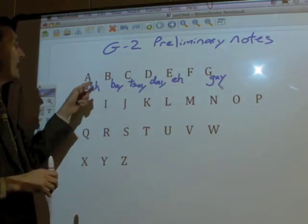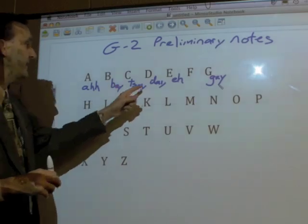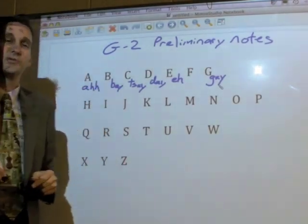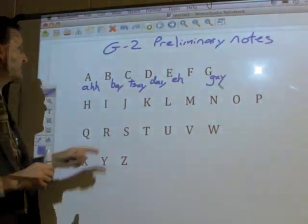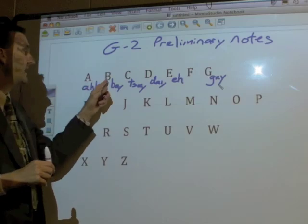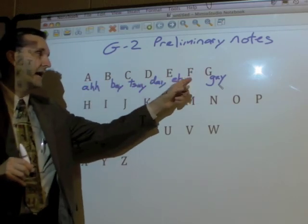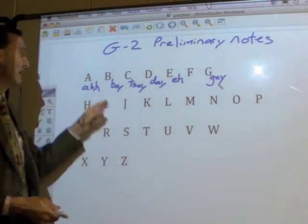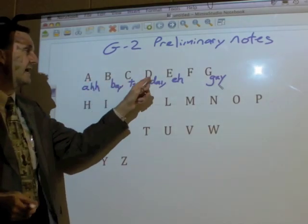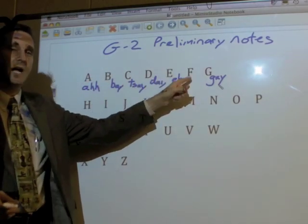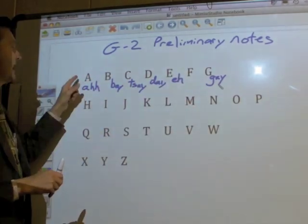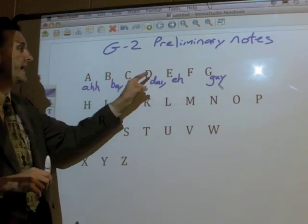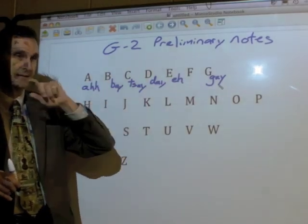So we have: ah, b, tse, dae, ae, f, gae. Try that yourselves: ah, b, tse, dae, ae, f, gae. Again: ah, b, tse, dae, ae, f, gae. One more time: ah, b, tse, dae, ae, f, gae. Very good.